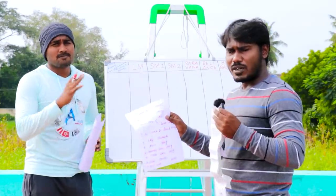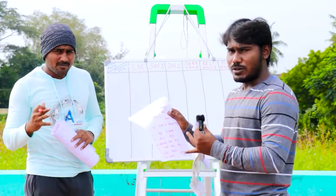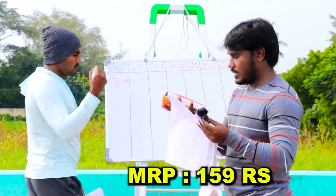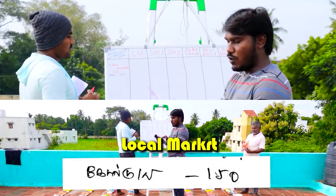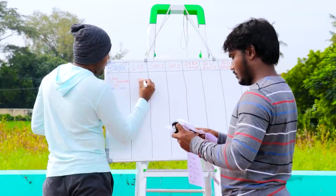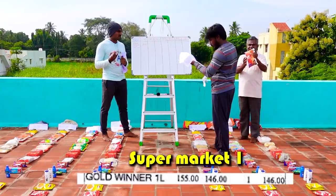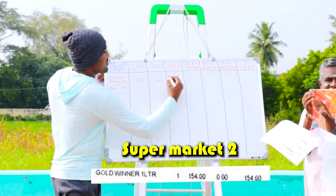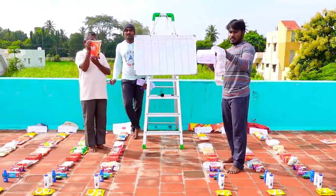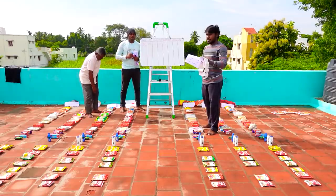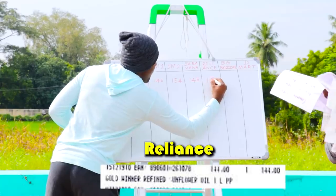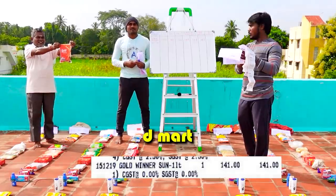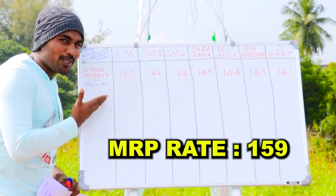If we check all the prices of our products — 1 litre gold procure. The MRP is 150. If you look at the supermarket, the price is 146. The supermarket is 154. Saravana Stores is 155. The retail is 144. Big Bazaar is 153. D-Mart is 155.